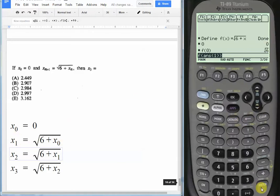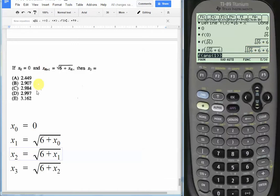Now to find x sub 2, here's the cool part. Just hit enter again, and it's just this. Now to find x sub 3, let's hit enter one more time. And the answer is this mess, radical rad 6 plus rad 6 plus rad 6. Now you can see the answer choices,